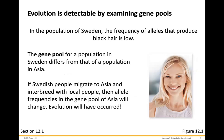Evolution is detectable by examining gene pools. In a population of Sweden, the frequency of alleles that produce black hair is low. The gene pool for a population in Sweden differs from that of Asia. If Swedish people migrate to Asia and interbreed with local people, then the allele frequencies in the gene pool of Asia will change because you're introducing new alleles into the equation. And this is how evolution can occur.